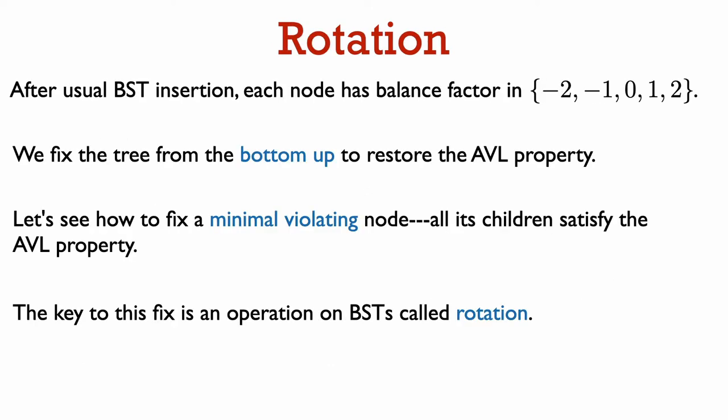Let's say we're walking up the tree from the newly inserted leaf to the root and we come across the first node that no longer has the AVL property. It is key to note that since this is the first node we come across that does not have the AVL property, all of the children of this node and their children, etc., will still have the AVL property. The way that we will restore the AVL property of this node is a general operation on binary search trees called rotation.